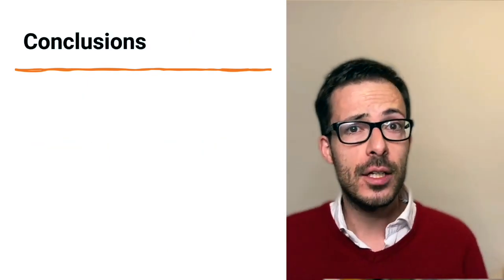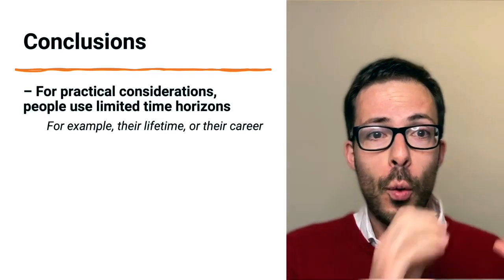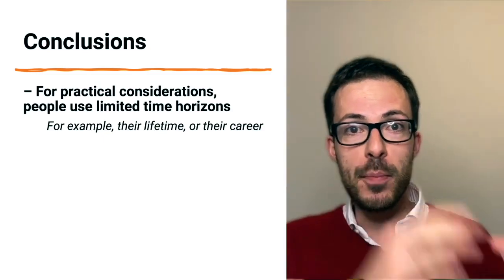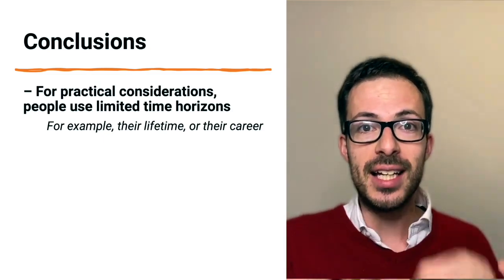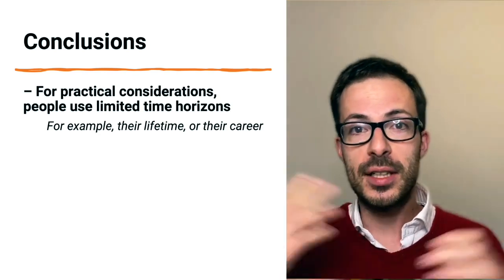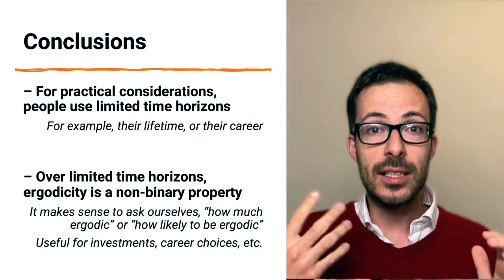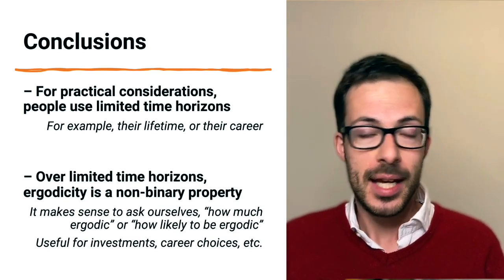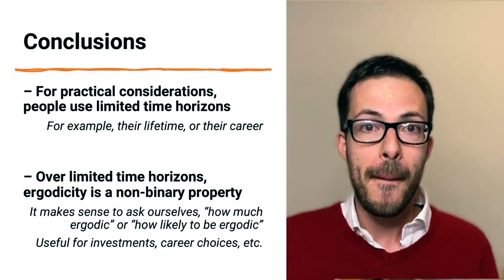So just to summarize the two main takeaways from today's brief talk. One is that in practical considerations, people never use infinite time frames, they always check limited, finite time horizons, for example, their lifetime or their career. And then the second takeaway is that ergodicity is a non-binary property. It's not binary like always ergodic or always non-ergodic, yes or no.